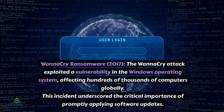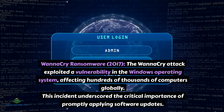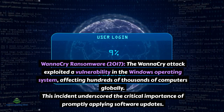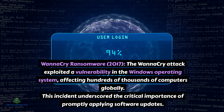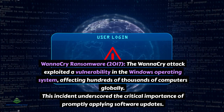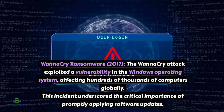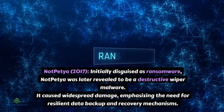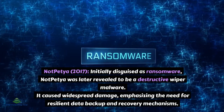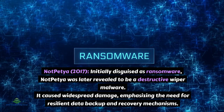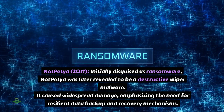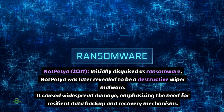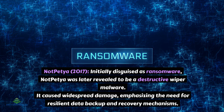Real-life examples. WannaCry ransomware, 2017: the WannaCry attack exploited a vulnerability in the Windows operating system, affecting hundreds of thousands of computers globally. This incident underscored the critical importance of promptly applying software updates. NotPetya, 2017: initially disguised as ransomware, NotPetya was later revealed to be destructive wiper malware. It caused widespread damage, emphasizing the need for resilient data backup and recovery mechanisms.